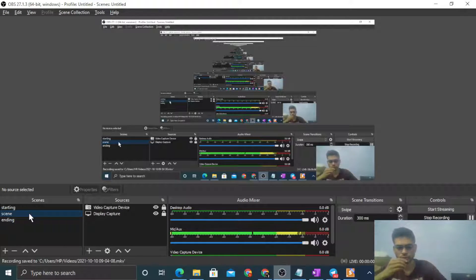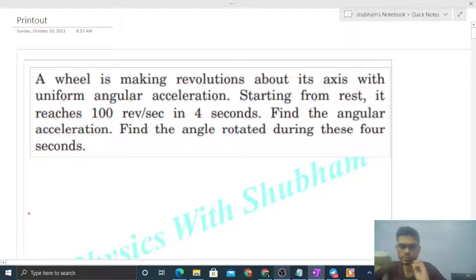Okay, hi everyone. Today let's discuss this interesting problem. A wheel is making revolutions about its axis with uniform angular acceleration. Starting from rest, it reaches 100 revolutions per second in 4 seconds. Find the angular acceleration and find the angle rotated during these four seconds.